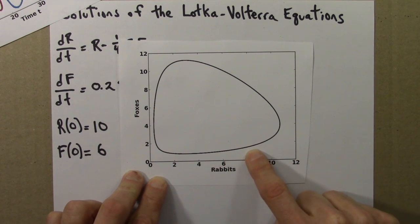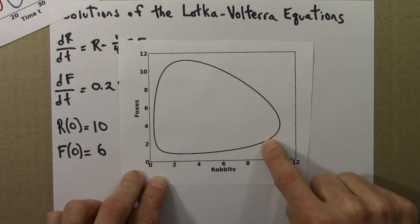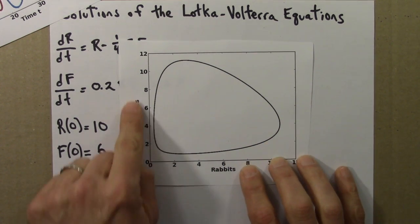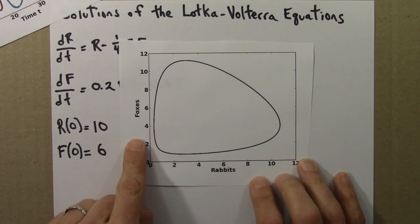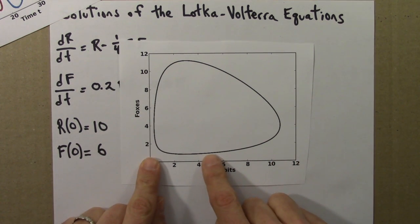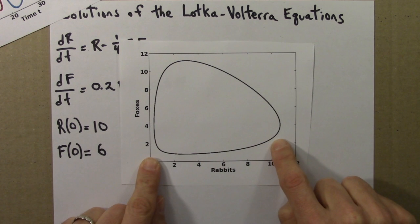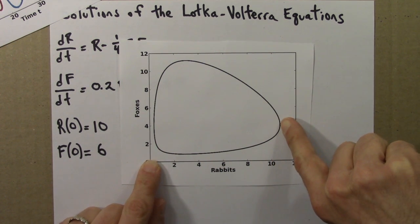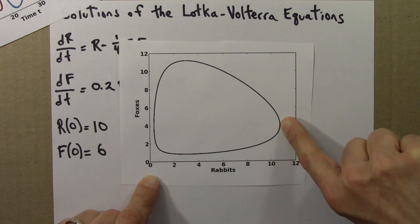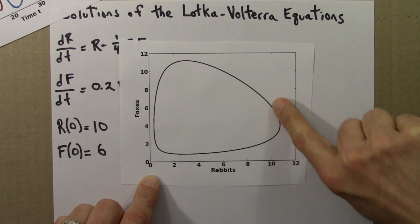As the rabbit populations increase, the fox population starts to increase as well. Moving up on this diagram, up on this phase plane means that fox population is getting larger. So the fox population is getting larger and larger and larger. And here, the rabbit population starts decreasing. The rabbit population is decreasing because we're moving to the left.